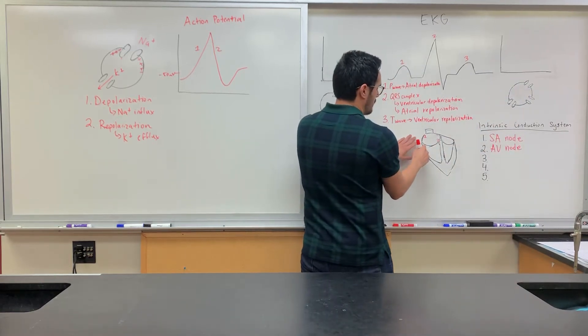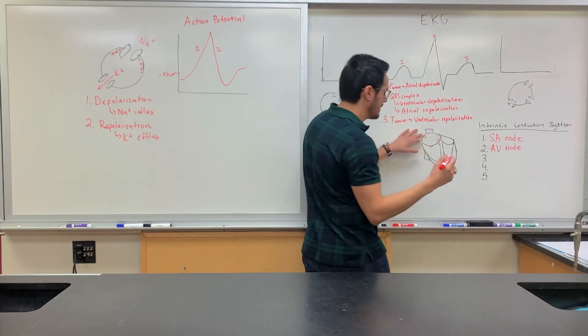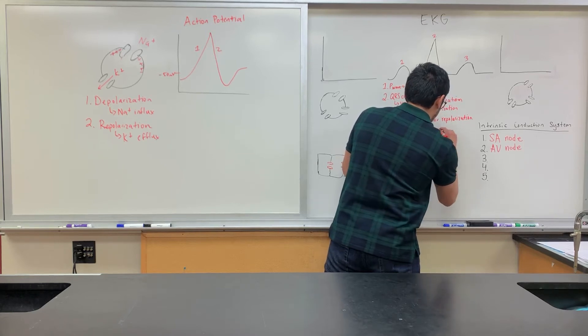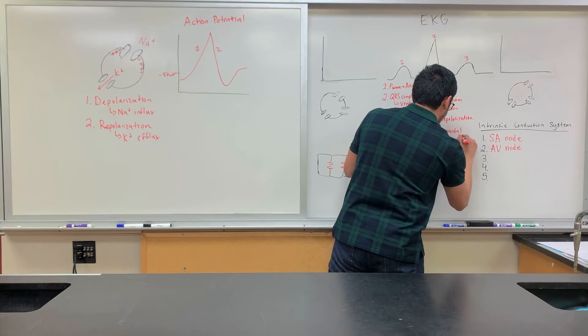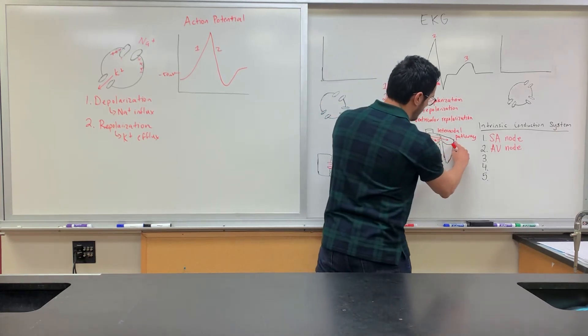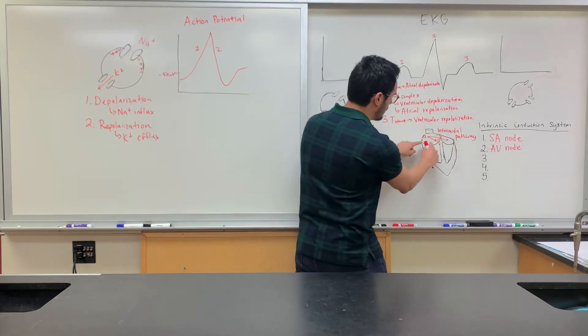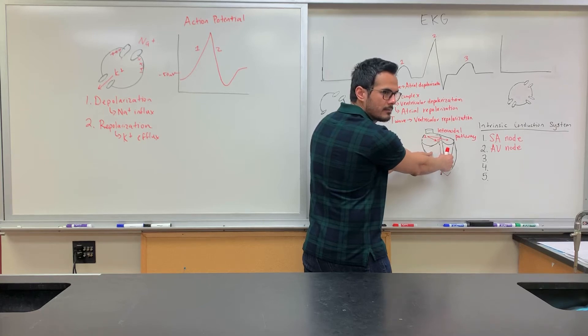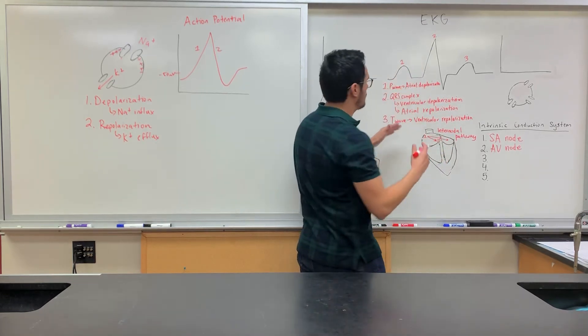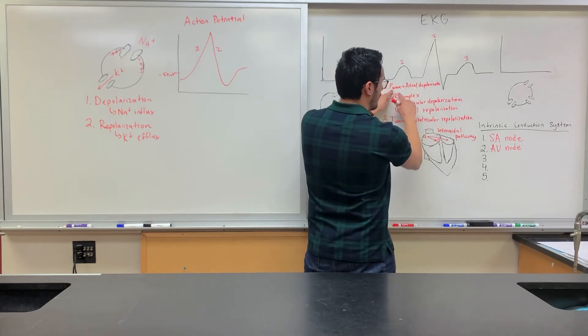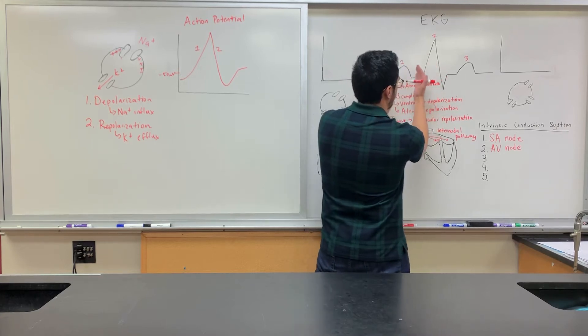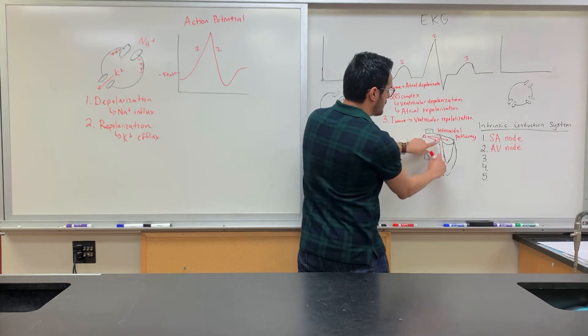The SA node is known as the pacemaker of the heart because it'll send the signal here to the AV node. Then there's also something known as the internodal pathway that will send it to the left atrium. Because remember, the right and left atrium, both of them have to contract in order to get it into the ventricles. But the muscle is not going to contract until after the signal. So during atrial depolarization, which is onset by the SA node, that's what starts the P wave.